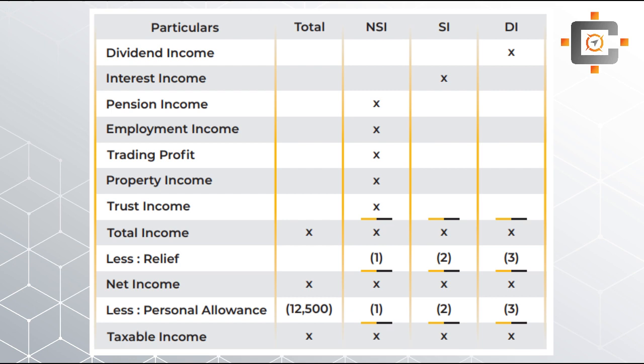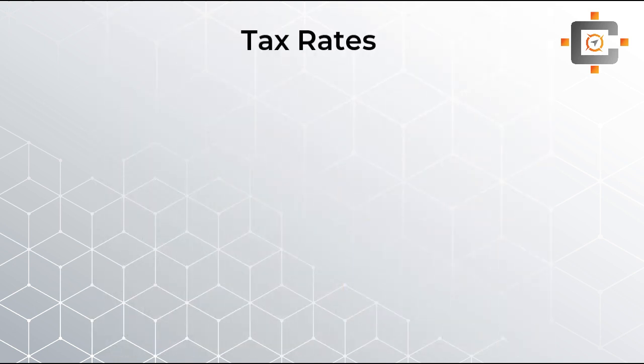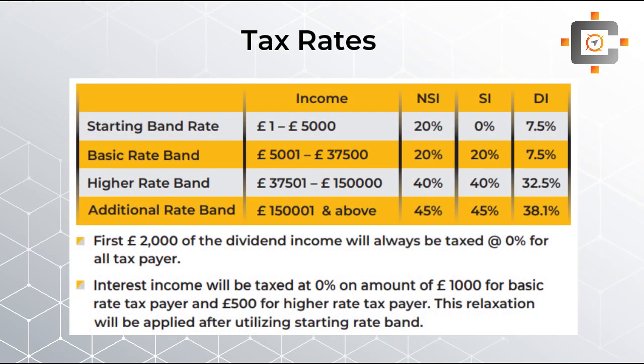After deduction of the relief, you will get your net income. Once you get the net income, the deduction of the personal allowance will follow — and you already know that the personal allowance of £12,500 is available for the tax year 2021. After deducting the personal allowance, you will get the taxable income. Once you have the taxable income, you apply the tax rates and finally arrive at your tax liability. For reference, the tax rates table is shown on the screen.